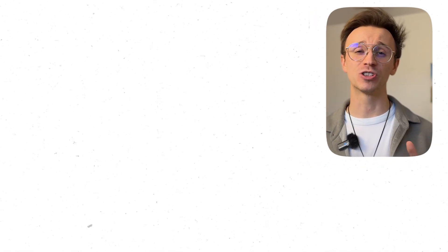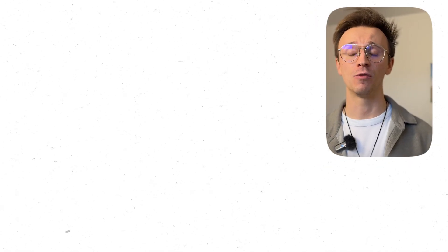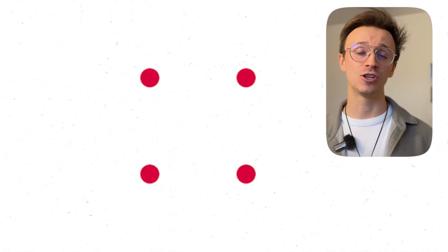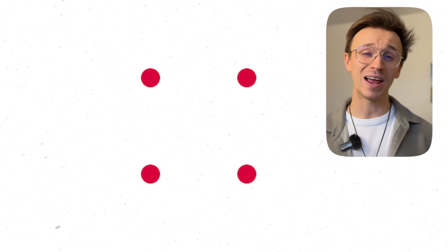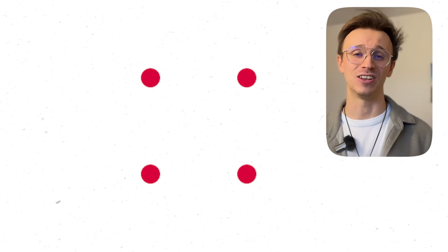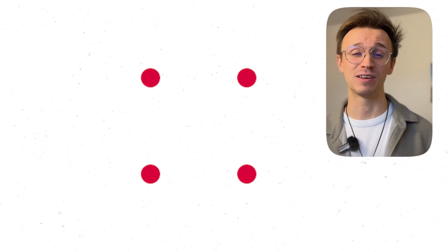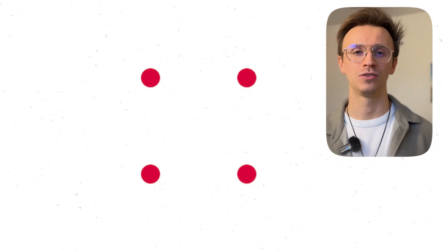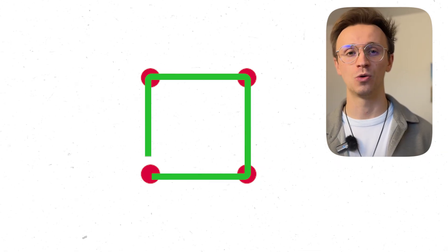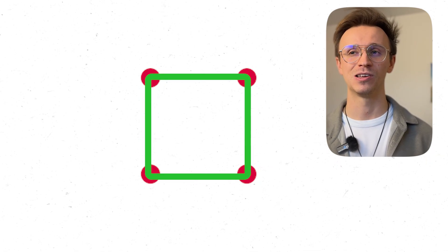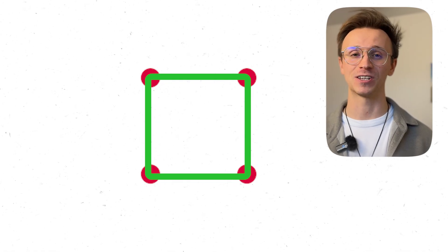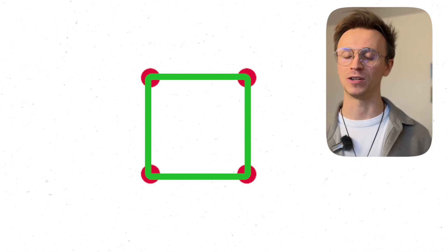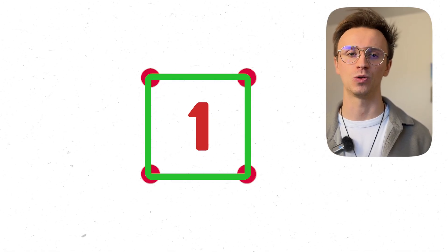The easiest, most simple problem I can think of is a two by two grid of dots, because now I have very little choice in the squares I can make. There's in fact just one square — using all the dots — one small square. So the answer to how many squares can I draw in a two by two grid is just one.